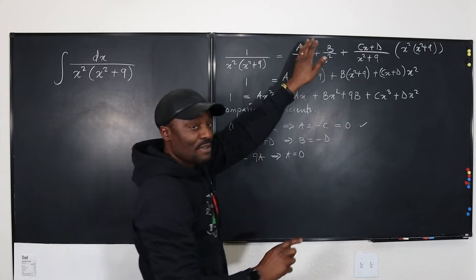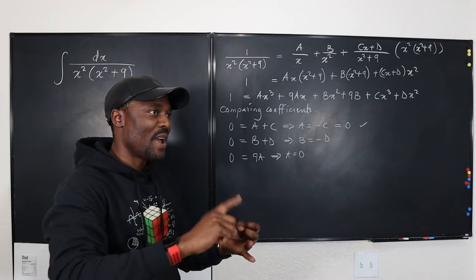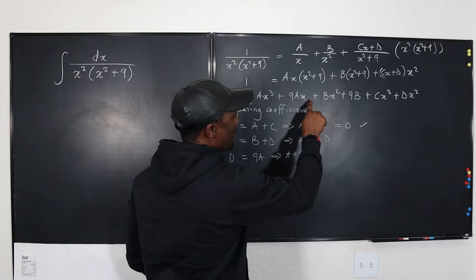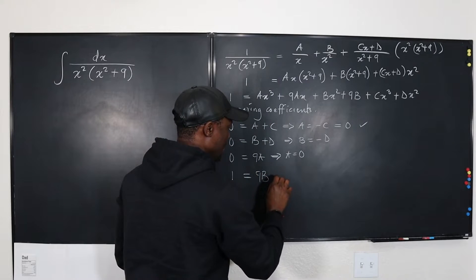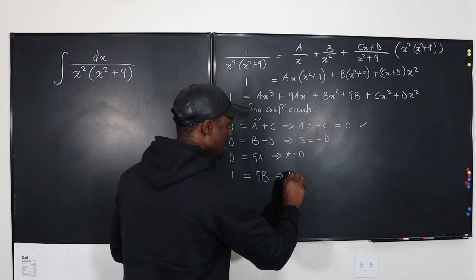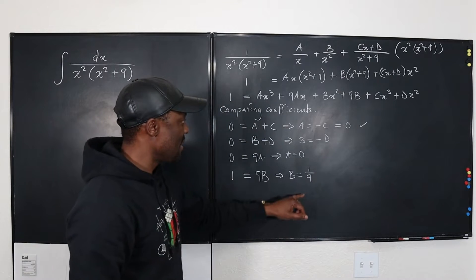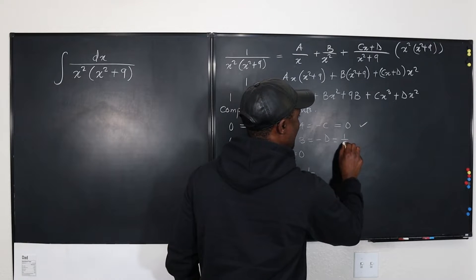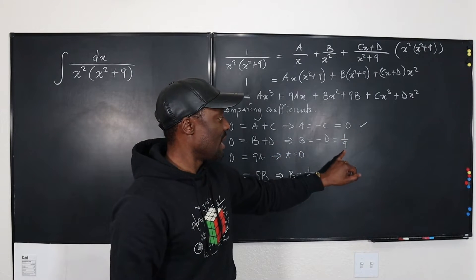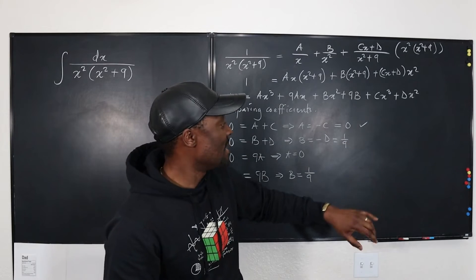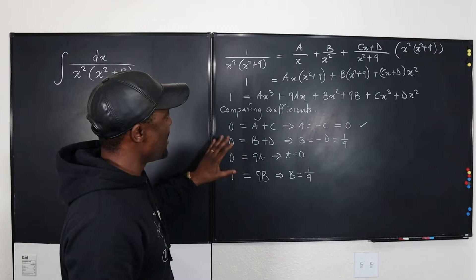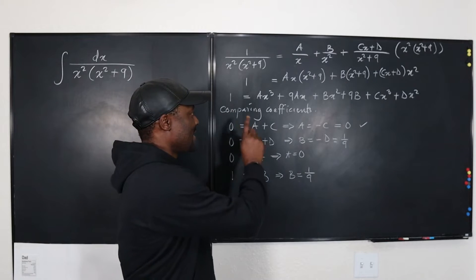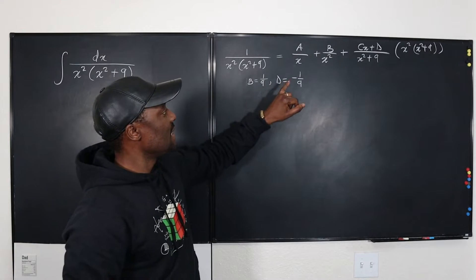We don't know yet what b is, so let's go on. We've gone from x cubed to x squared to x. Now we deal with the constant. The constant on the left is 1. The constant on the right is 9b. If 9b equals 1, it means b equals 1 over 9. If b is 1 over 9 and b equals negative d, then d is negative 1 over 9. So we've got everything we need. We can go back and plug them in.